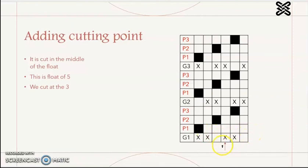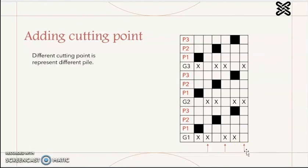For the pile one, we cut here. For the pile two, we have a new position of the cutting point. And for the pile three, we have another position of the cutting point. You can find out, they have different cutting points, it represents different pile.